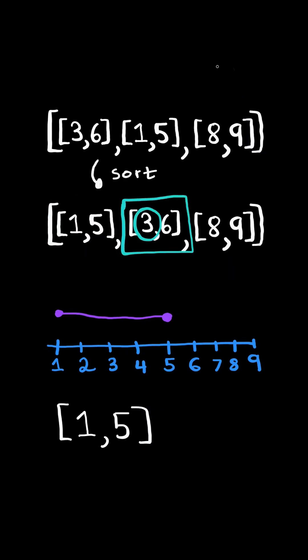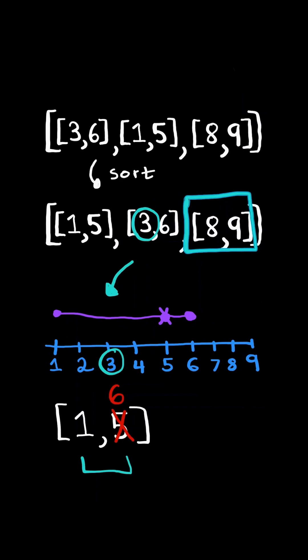If the start value is in between the previous list range, then it overlaps. And so we update the previous range start and end value to account for the overlap. And we continue.